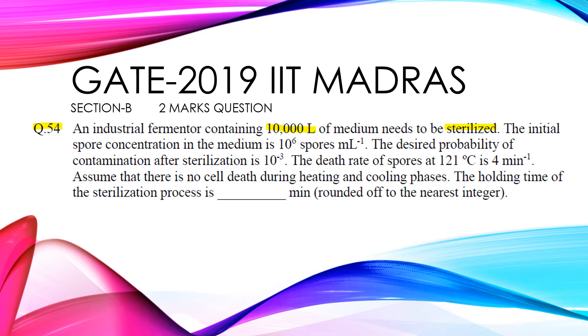The initial spore concentration in the medium is 10 to the power 6 spore per ml. The desired probability of spore concentration after sterilization is 10 to the power minus 3. The death rate of the spore at 121 degree Celsius is 4 per minute. Assume that there is no cell death during heating and cooling phases. The holding time of the sterilization process is dash minute.